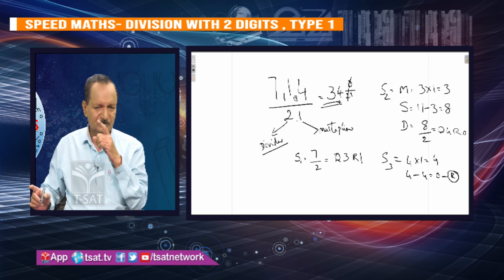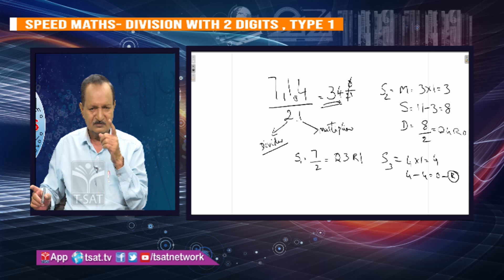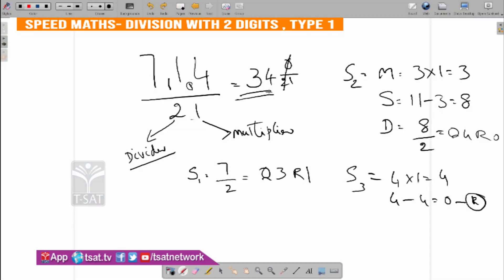4 into 1 is 4. 4 minus 4 is 0. 0 by 21 is 0. Reminder is 0. So the answer is 34. 714 divided by 21 is 34. We only needed the second table — the 2-table — for a 2-digit divisor. The last digit is always the remainder.